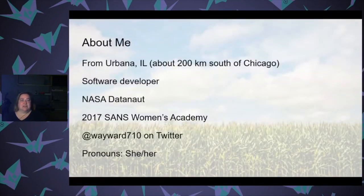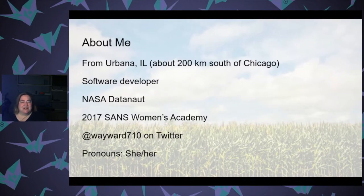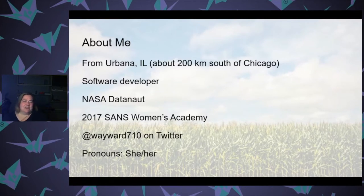Let's start with a brief introduction. I'm from Urbana, Illinois — about 200 kilometers or 130 miles south of Chicago. I work as a software developer at a nonprofit called ASPCA, and I'm a NASA datanaut. I was able to participate in the 2017 SANS Women's Academy, which was a great experience. I'm Wayward710 on Twitter, and my pronouns are she and her.